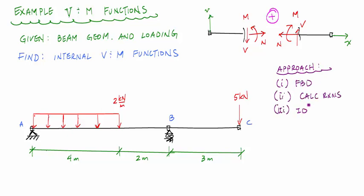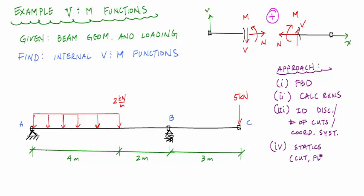Step three is to identify discontinuities, the number of cuts, and draw the coordinate system for each cut. Once that's done, it's all equilibrium equations — make the cut, draw the FBD, and apply equilibrium equations to get the shear and moment functions.